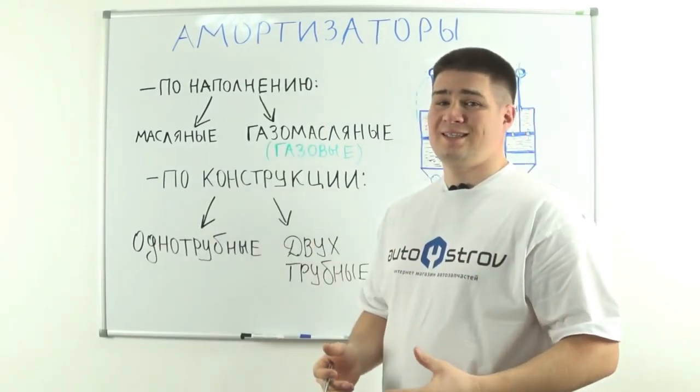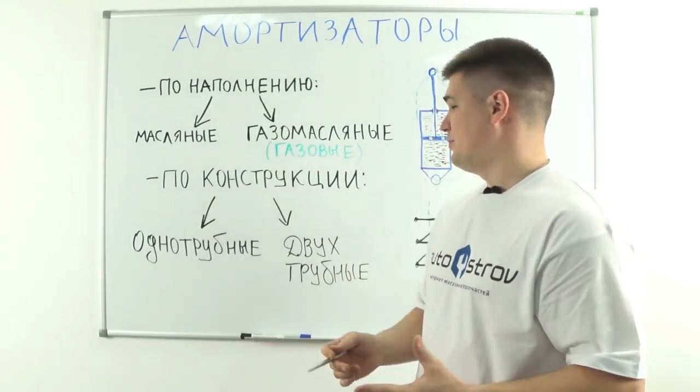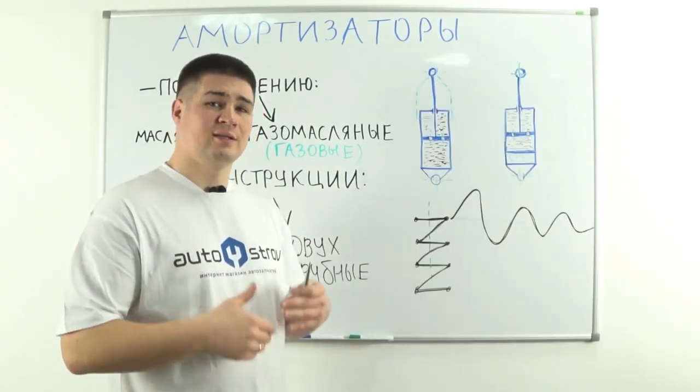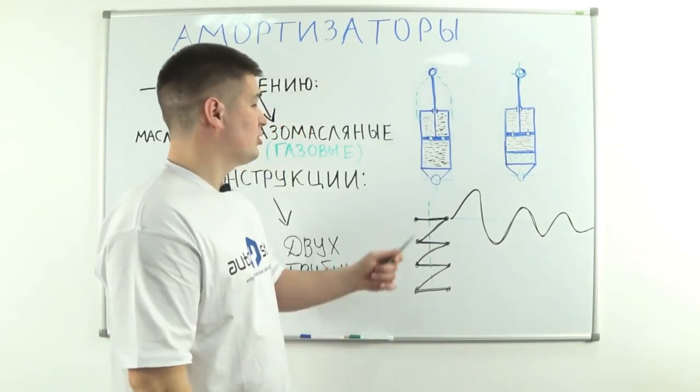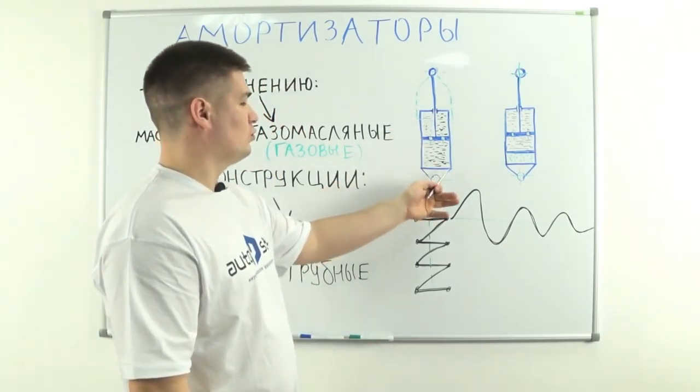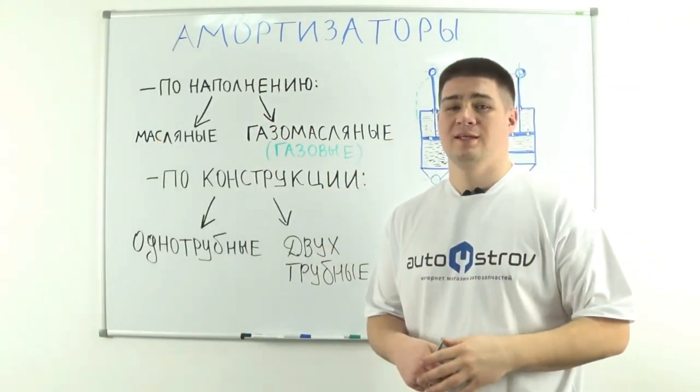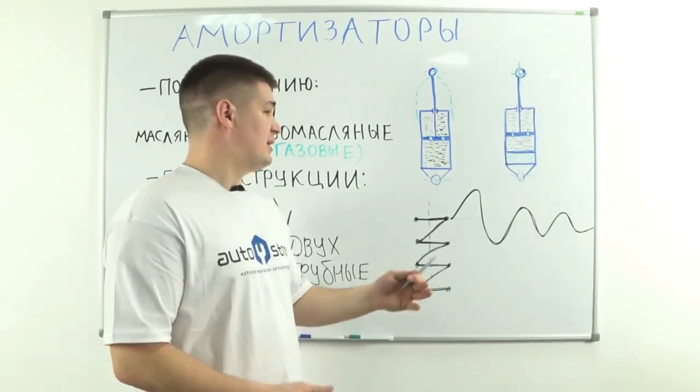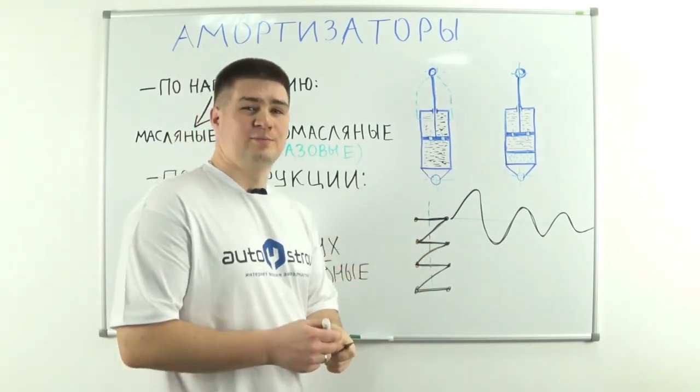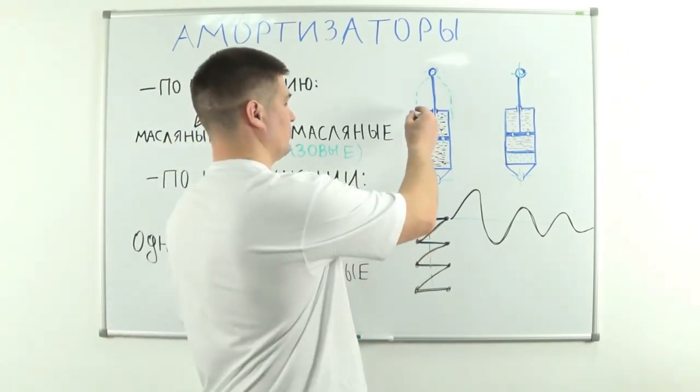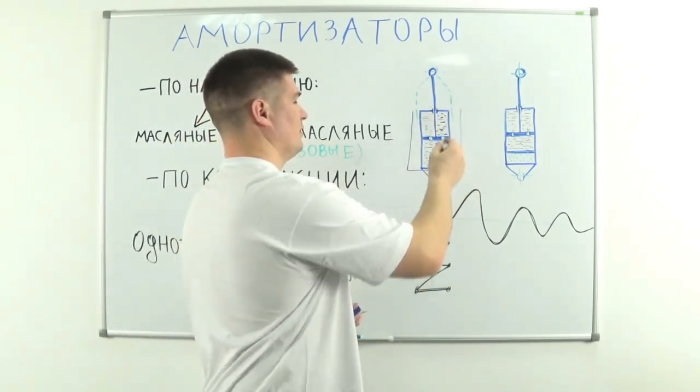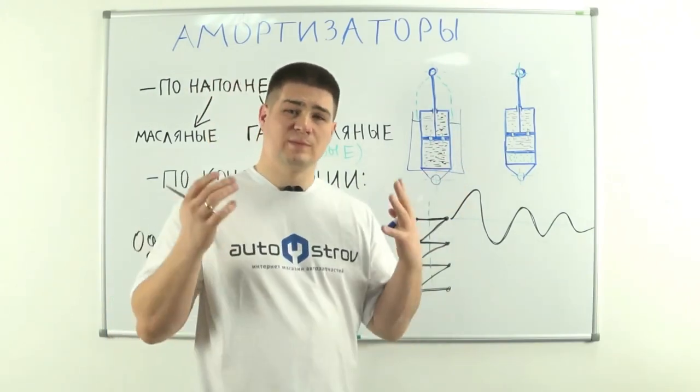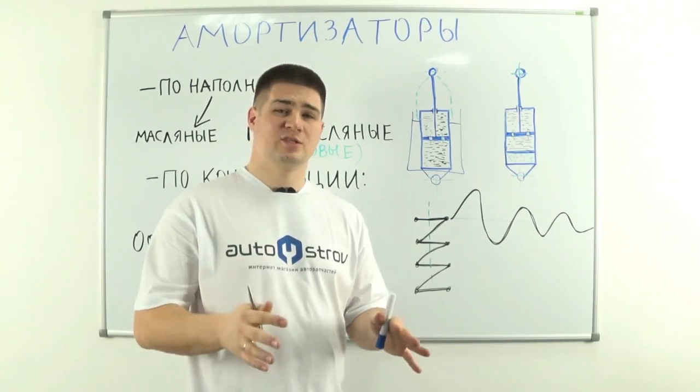By design, shock absorbers also come in two types. The first type is mono-tube shock absorbers. Today I talked through the entire video about mono-tube shock absorbers. In their design, they have one cylinder. As you already understood, there are also two-tube shock absorbers. This device consists of two nested cylinders. It roughly looks like this. Here are these two tubes. But I will not consider its design in this video. This should be a separate topic. It is a little more complicated.